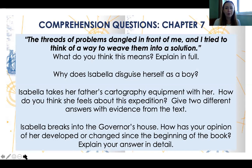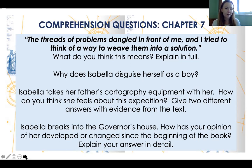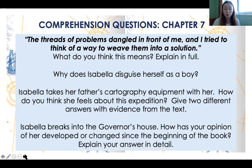Chapter seven questions: 'The threads of problems dangled in front of me and I tried to think of a way to weave them into a solution' — what do you think this means in the context of the story? Why does Isabella disguise herself as a boy? Isabella takes her father's cartography equipment with her — how do you think she feels about this expedition? Give two different answers with evidence. Think about everything you know about Isabella and consider that she probably has mixed emotions — give two contrasting emotions with valid evidence.